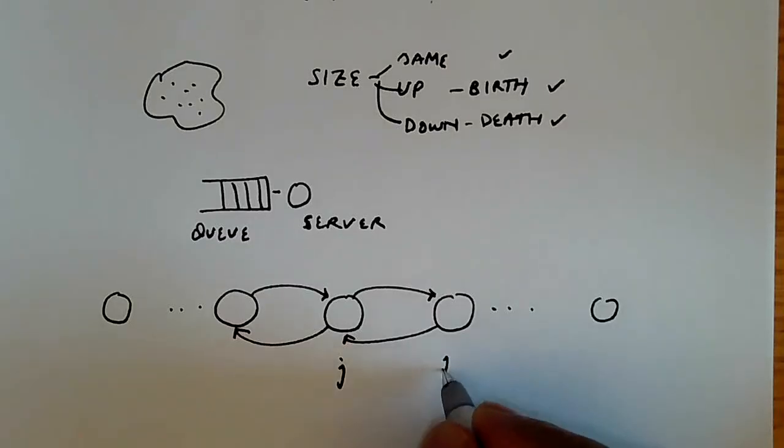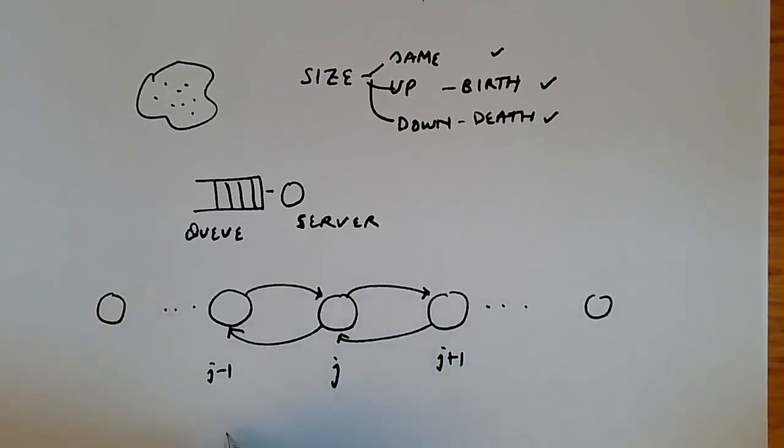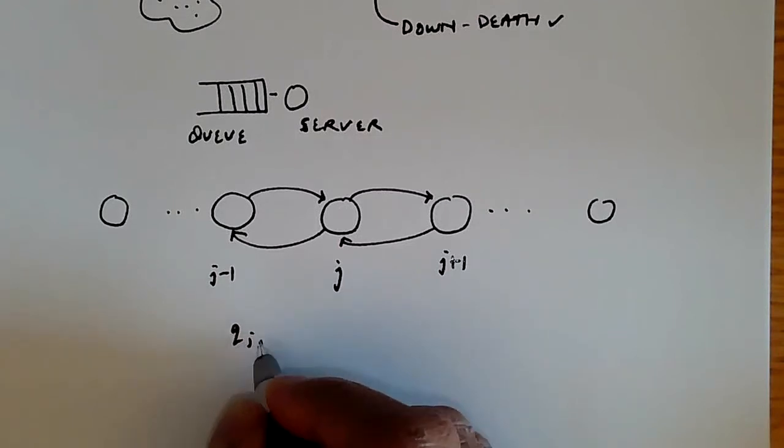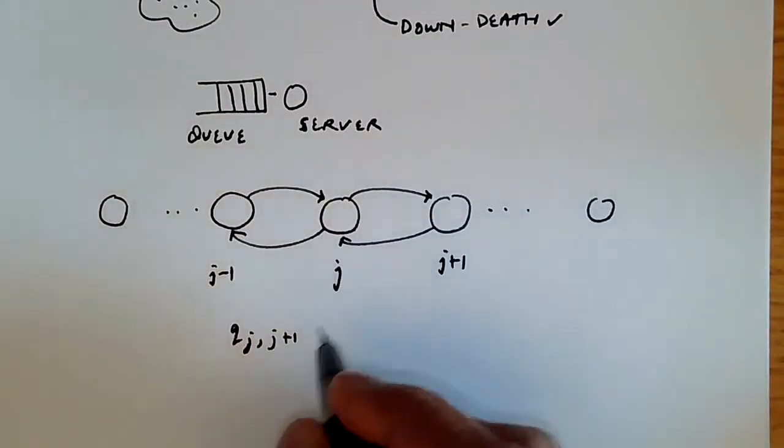State j, and this is state j plus 1, and this is state j minus 1. Remember that we denote by q j comma j plus 1, that is the rate at which we go from j to j plus 1.